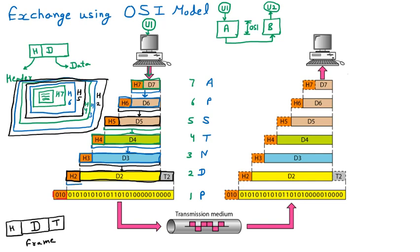This complete package becomes the data for the physical layer. The physical layer deals with bits — zeros and ones. So D1 is represented as binary like 1 1 0 0 1 1. The physical layer also adds its own header H1, which is also in bits. One final header H1 is added.